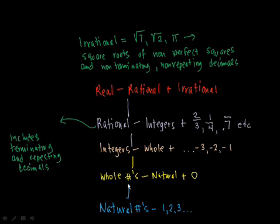As we go up, the next largest set are what are called the whole numbers. They are the natural numbers plus they add 0 to it.